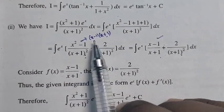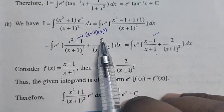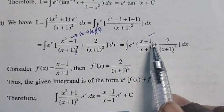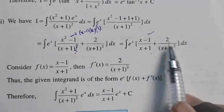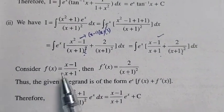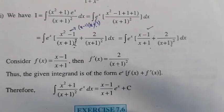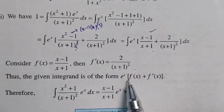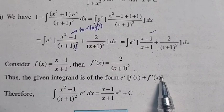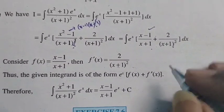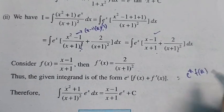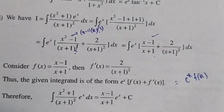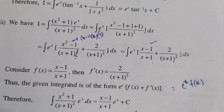Now x² − 1 = (x − 1)(x + 1), so one (x + 1) cancels, leaving (x − 1)/(x + 1). So we have e^x · [(x − 1)/(x + 1) + 2/(x + 1)²]. Here f(x) = (x − 1)/(x + 1) and f'(x) = 2/(x + 1)². The answer is e^x · [(x − 1)/(x + 1)] + constant.